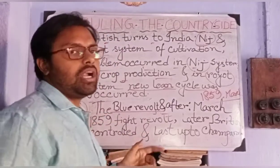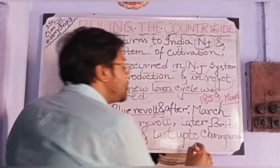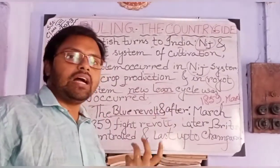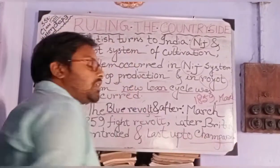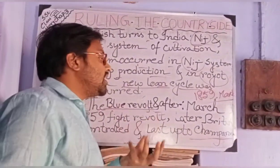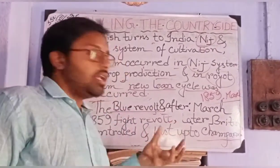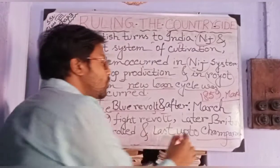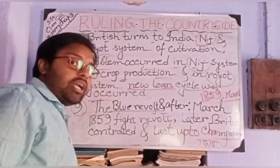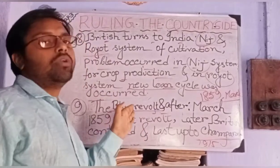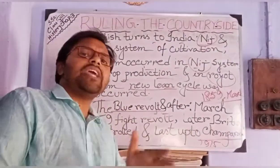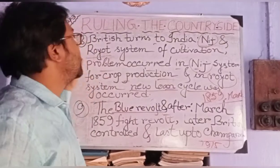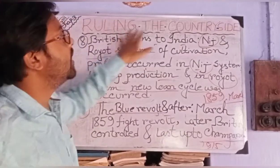The Blue Revolution lasted up to the Champaran movement. In 1915, when Gandhiji came from Africa to India, he first visited Champaran to see the tyranny and oppression of the British on the Indigo cultivators. From 1788 up to 1915, Indigo cultivation was continued. In spite of the Blue Revolution, the British changed their approach but did not stop Indigo cultivation. Thus the British administration continued to rule the countryside of India.